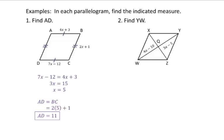Alright, pause now and try the second one on your own. Looking at number 2, the first thing that should pop out is diagonals. That should immediately take you to the rule that diagonals bisect each other. So Q is the midpoint. Labeling the diagram, WQ and QY are congruent to each other. So 4a minus 10 is equal to 3a minus 5.